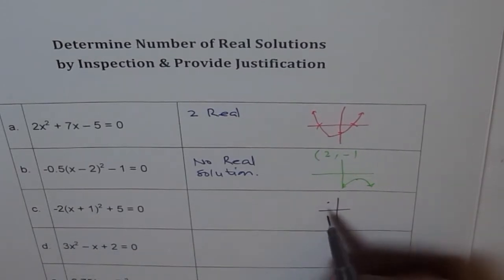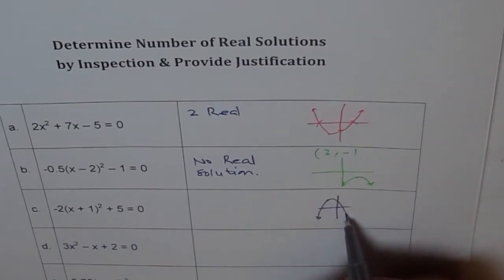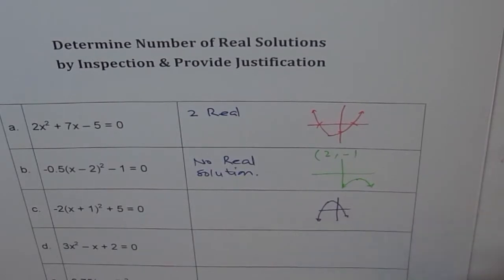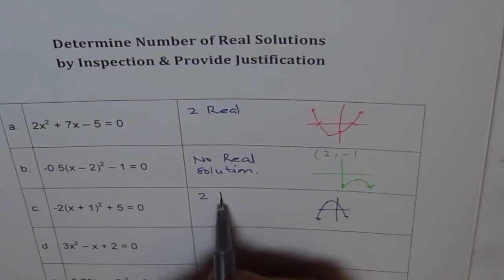And -2 means the graph will open downwards. And if the graph opens downwards then it should go and cut at two places, correct? So we have two real solutions.